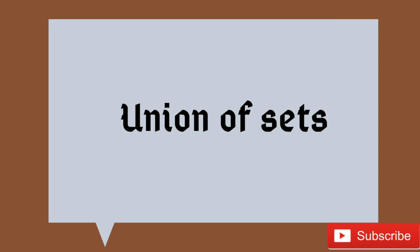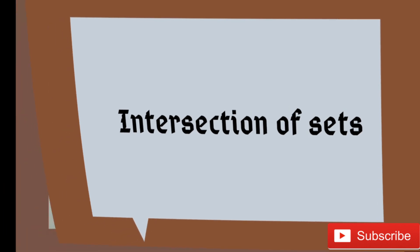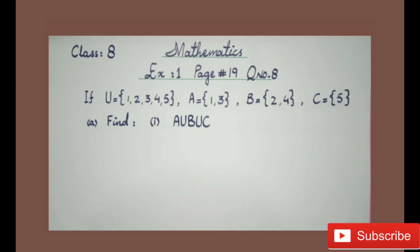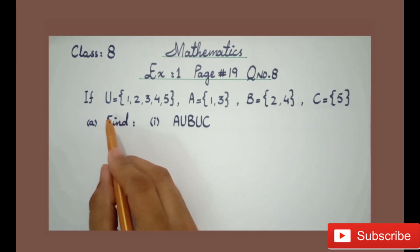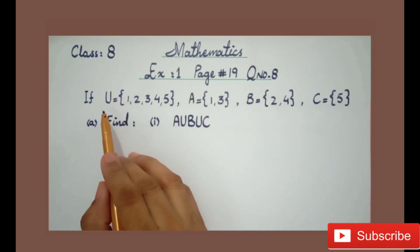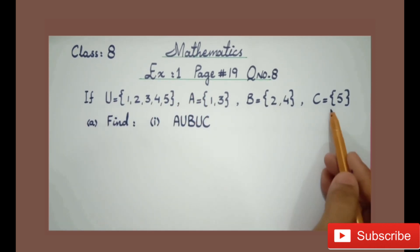The second operation of sets is intersection of sets. In this operation we make a set of only the common elements of the given sets. Means, we find and collect only the common elements into one set.